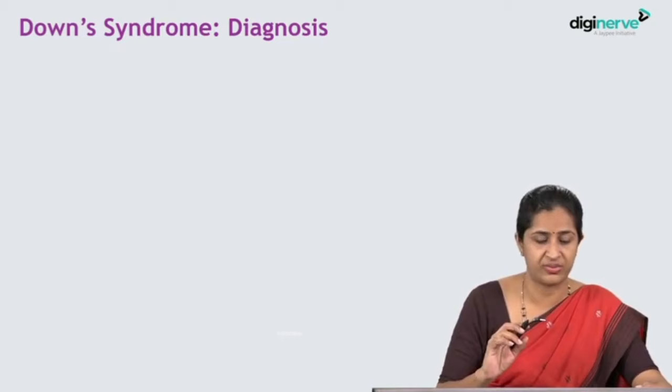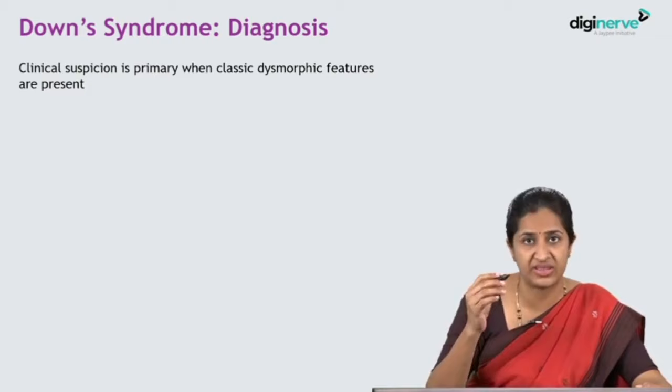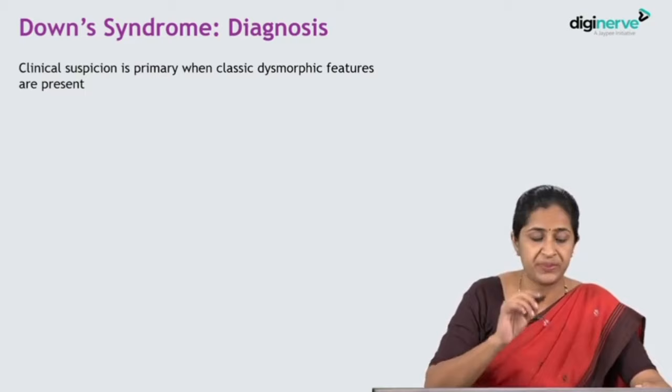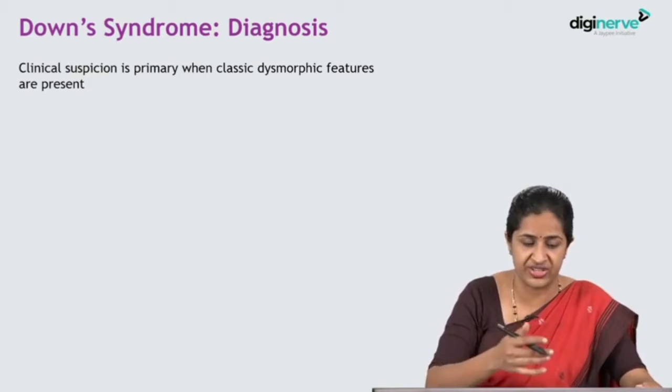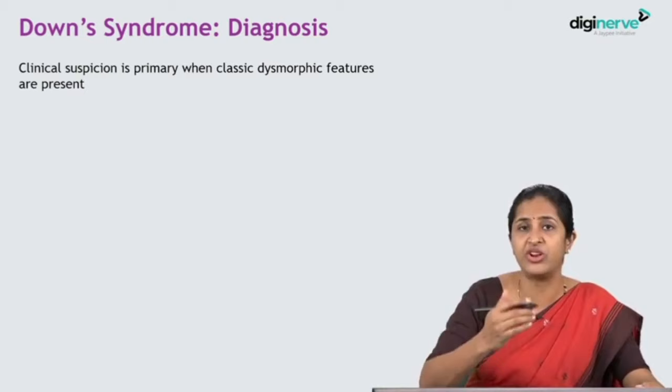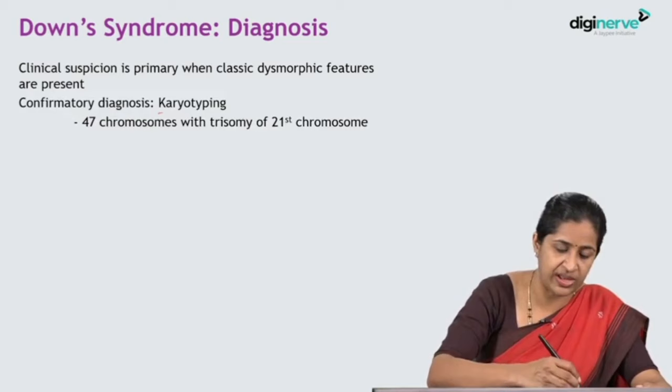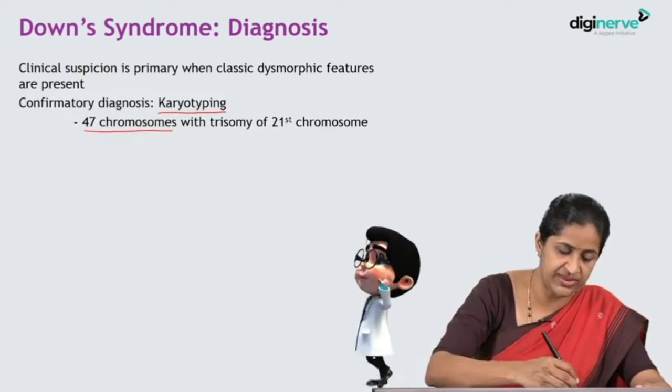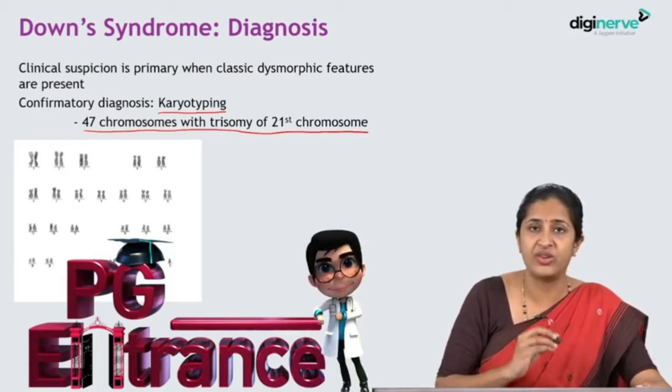Coming to the investigations in Down syndrome: these are primarily to diagnose whether it is Down syndrome and what type it is. Clinical suspicion is primary — when you see classical dysmorphic facial features, you start suspecting Down syndrome. After suspecting, you confirm by karyotyping. Karyotyping will show 47 chromosomes with three copies of the 21st chromosome.